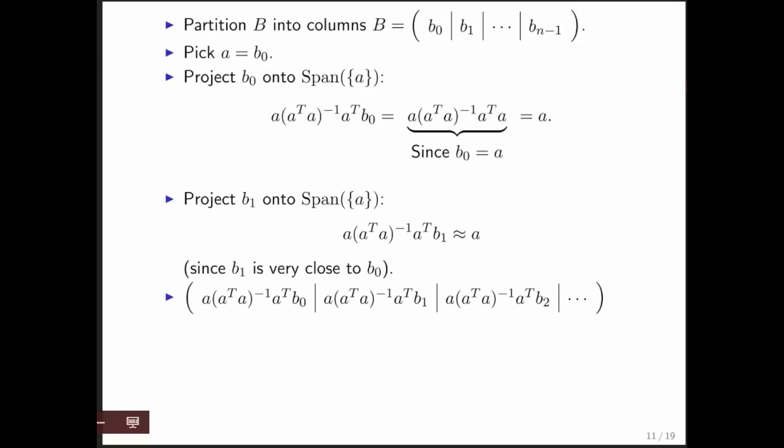You can do this for every one of the columns. So here we look at the columns of matrix B. Remember, we busted up B by columns. And we're projecting each of those columns onto the space spanned by A. And if the columns are very similar to A, then that would be a good approximation. And if the columns are not very similar, then it would not be a very good approximation.